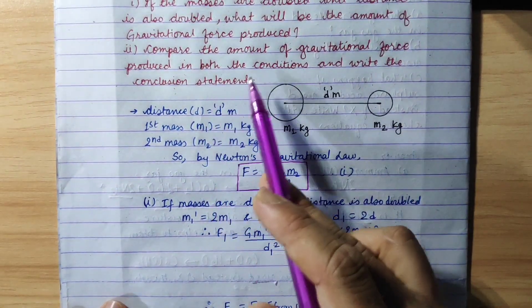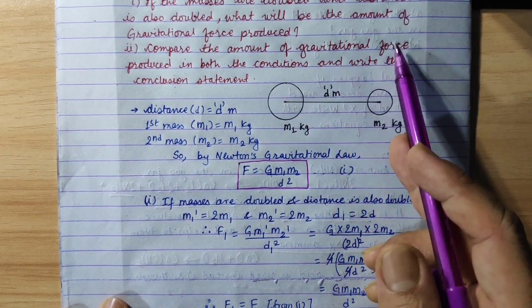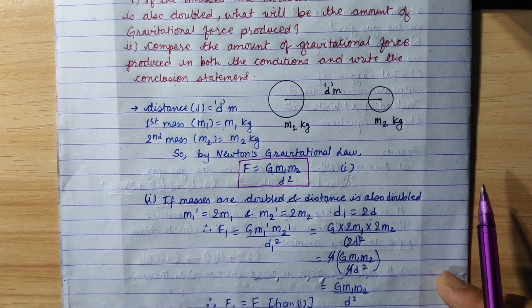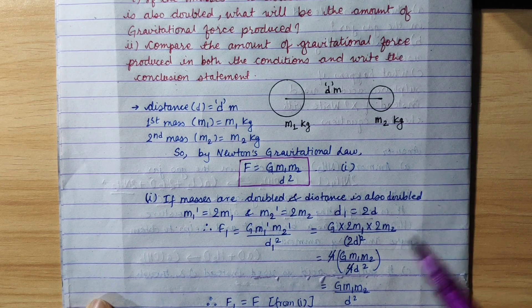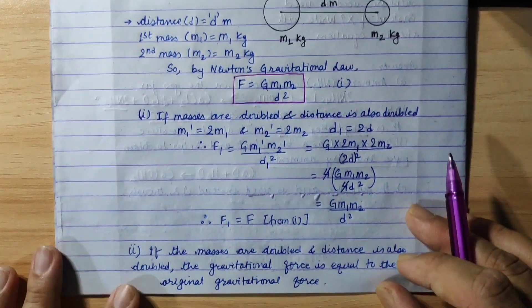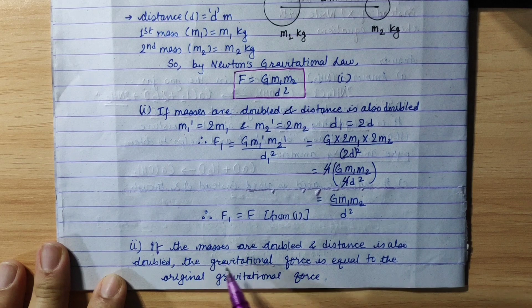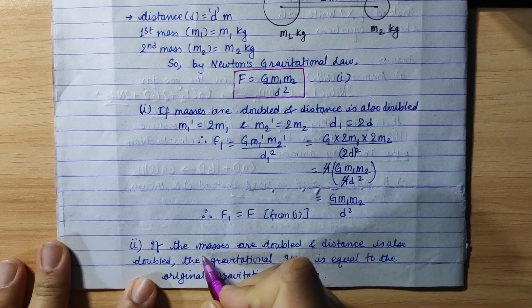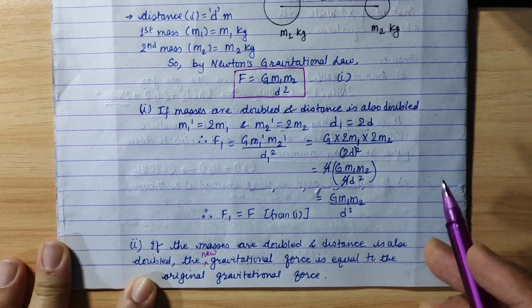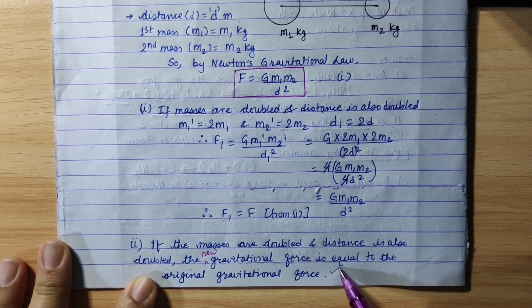Now the question is: compare the amount of gravitational force produced in both conditions. The new condition in the second case — the gravitational force is equal to the original gravitational force. When mass is doubled and distance is doubled, the new gravitational force equals the original gravitational force.